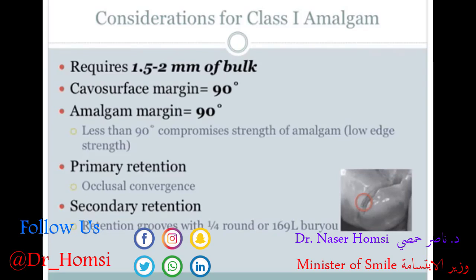For amalgam, be aware of a few key things. First, maintain enough bulk — with proper thickness, amalgam is a very strong material and good for the posterior region, but if too thin it's prone to fracture. The cavo-surface margin should be as close to 90 degrees as possible to support the enamel and also to give the amalgam 90 degrees of thickness at the edges. Unlike composite, amalgam cannot be bonded to tooth structure, so we need to mechanically lock it in place using occlusal convergence.